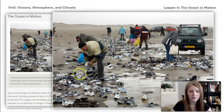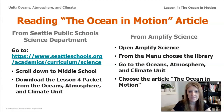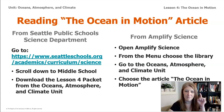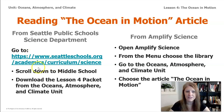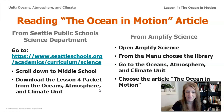There are two ways to get the article. First, you can go to your Amplify Science account, open the menu, choose the library, and then choose the Oceans, Atmosphere and Climate unit, and select the article The Ocean in Motion. Alternatively, go to seattleschools.org/academics/curriculum/science, scroll down to middle school, and download the lesson four packet from the Oceans, Atmosphere and Climate unit.